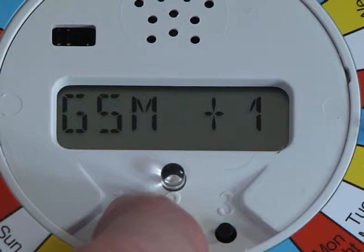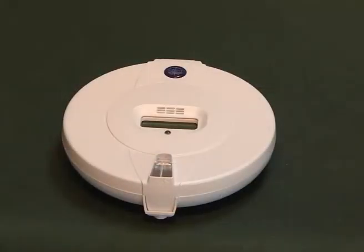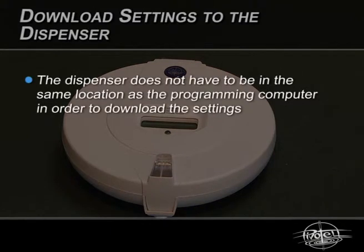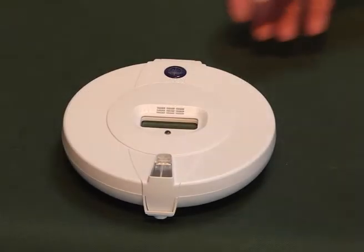Next, after all the settings have been made and saved, they must be downloaded to the dispenser. Please note that the dispenser does not have to be in the same location as the programming computer in order to download the settings. For example, a family member may program the dispenser on their computer and the settings can then be later downloaded by the family member or a pharmacist directly to the dispenser wherever it is.